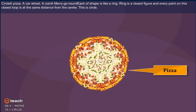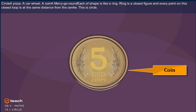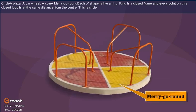A pizza, a car wheel, a coin, a merry-go-round. Each of these shapes is like a ring.